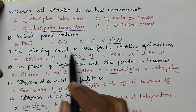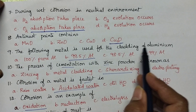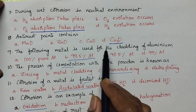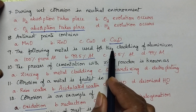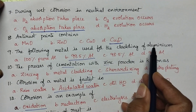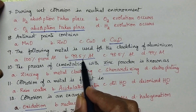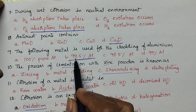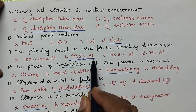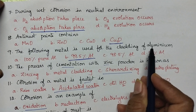The following metal is used for the cladding of aluminium. During the protection of pure aluminium from corrosion, aluminium should be 99.5% pure. So 99.5% aluminium is used during the cladding of aluminium.